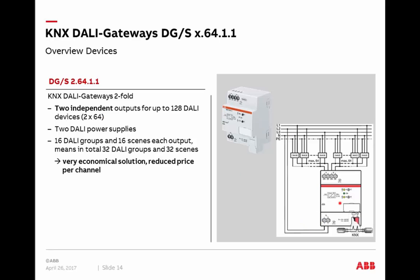In the two-fold component, there are two independent DALI power supplies — one per channel. In case of any malfunction on one channel, such as a short circuit or missing power, the second output is independently supplied, so there is no total component failure. Each output supports 16 DALI groups and 16 scenes — 32 groups and 32 scenes in total. From a commercial perspective, the price per channel is reduced, making it a very economical solution if you can use a two-channel device to connect up to 128 DALI ballasts. All functions are available for each channel with no disadvantages.